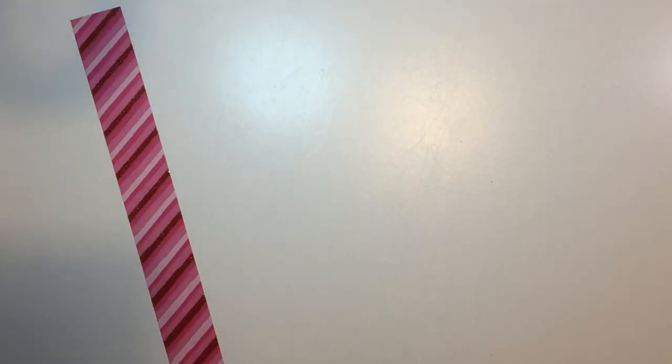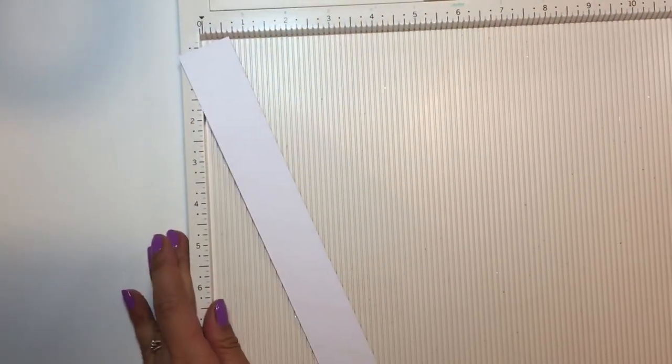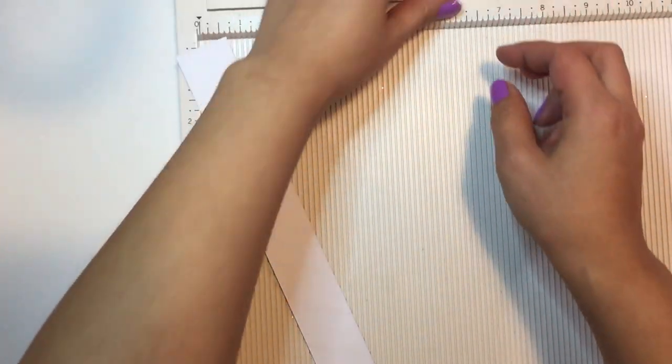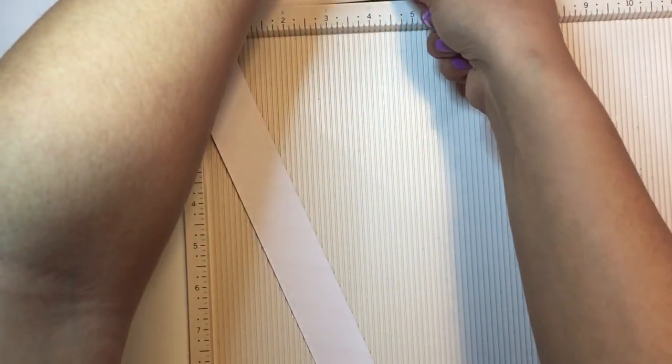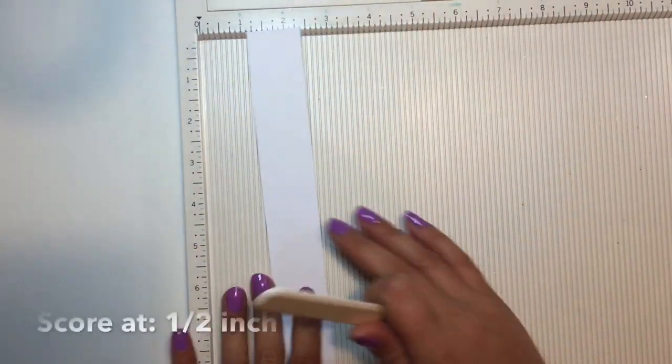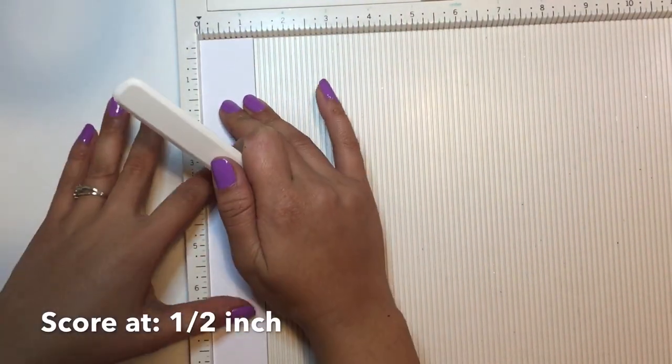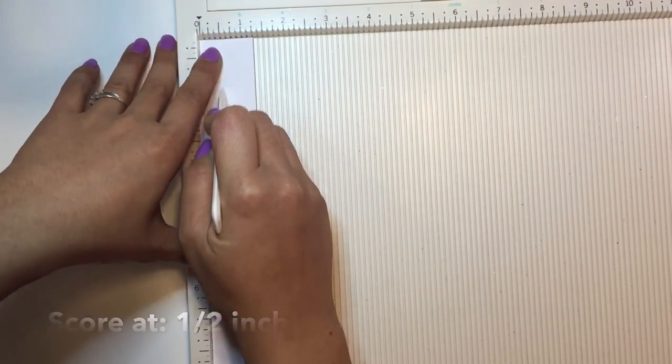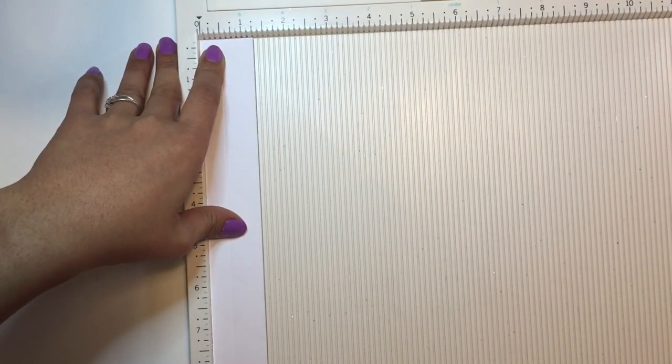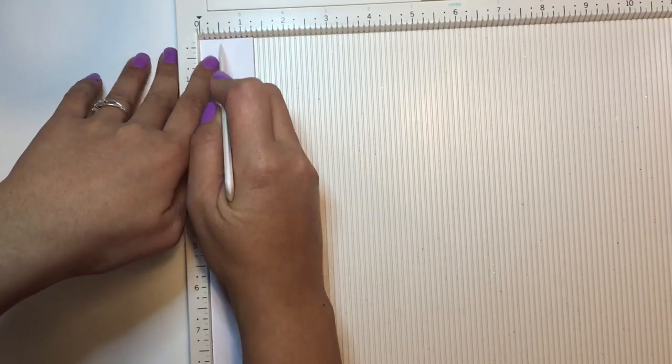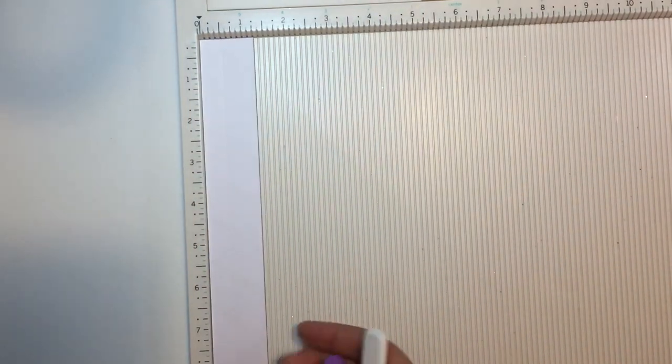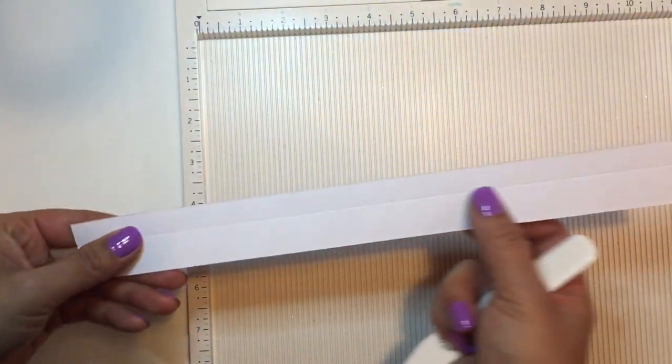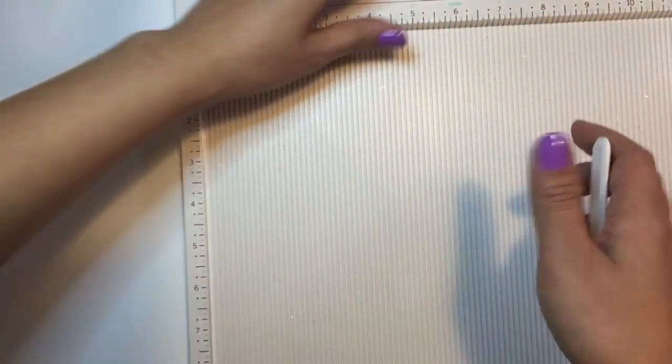And then you're going to need your scoreboard, and you are going to need to score at half an inch. So you just got to score that at half an inch. I tend to just go down and then I like to score one more time just in case to make that a nice line. And this will give it that envelope look even though you don't exactly see it in there.